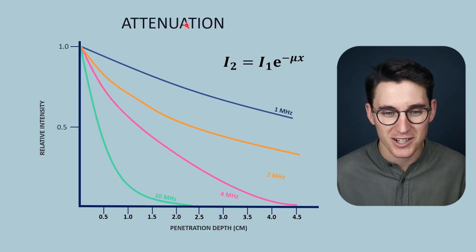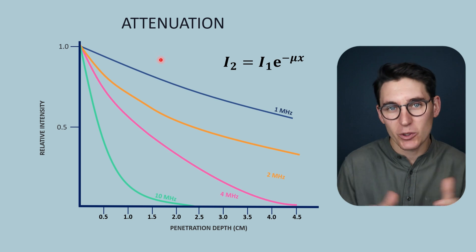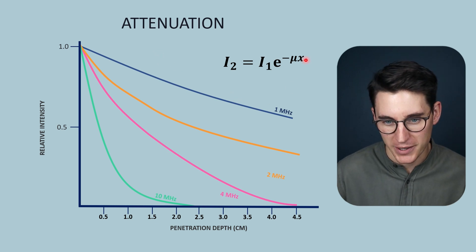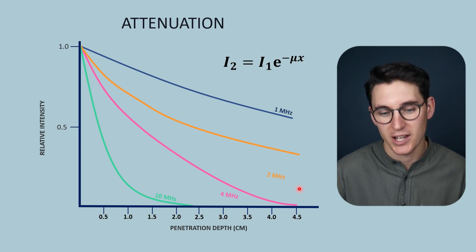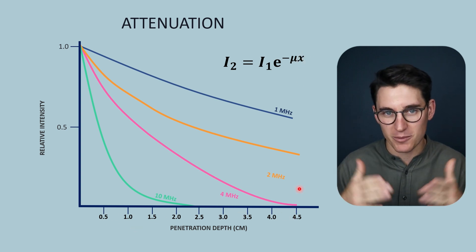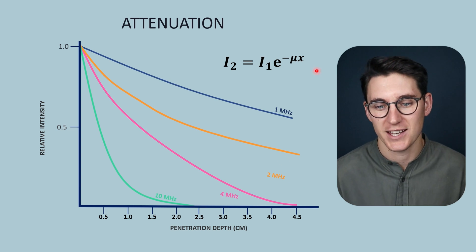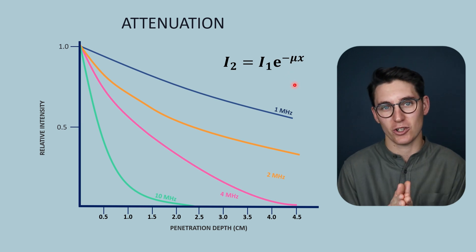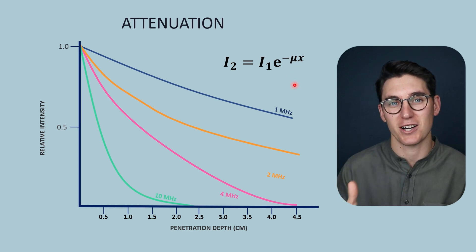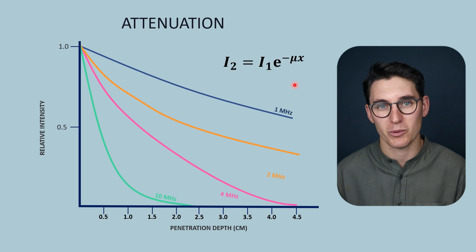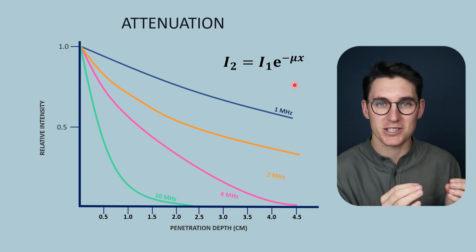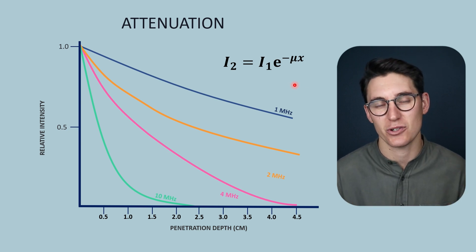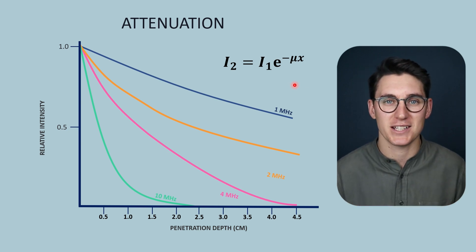When we looked at ultrasound beam attenuation, attenuation was dependent on a couple of factors. Firstly, it was dependent on the distance traveled into the tissue. The ultrasound beam gets attenuated the more it travels into tissue. Secondly, it was dependent on our attenuation coefficient. Now our attenuation coefficient was dependent on the ultrasound frequency. The higher the frequency, the more the beam is attenuated. And it was dependent on the actual tissue itself. How much scattering does that tissue have? How much heat loss happens into that tissue?